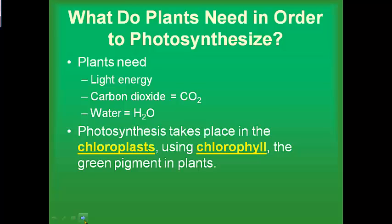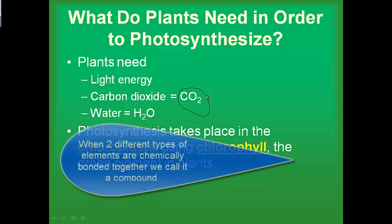So what do plants need in order to photosynthesize? They need light energy from the sun, captured by the chloroplasts with the chlorophyll. They need carbon dioxide — CO2, one carbon atom chemically bonded with two oxygen atoms. They also need water — H2O, two hydrogen atoms bonded with one oxygen atom. And finally, they need those chloroplasts with the chlorophyll. All those put together make photosynthesis happen.